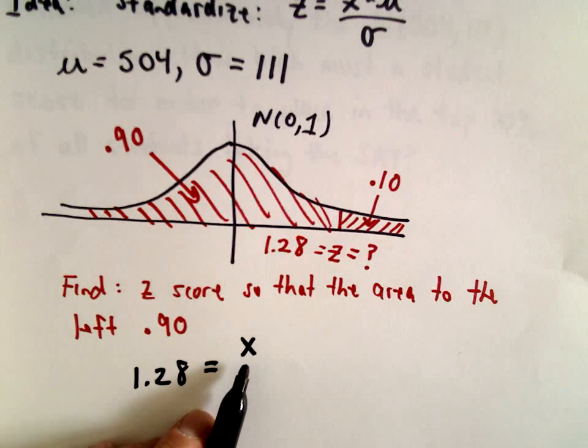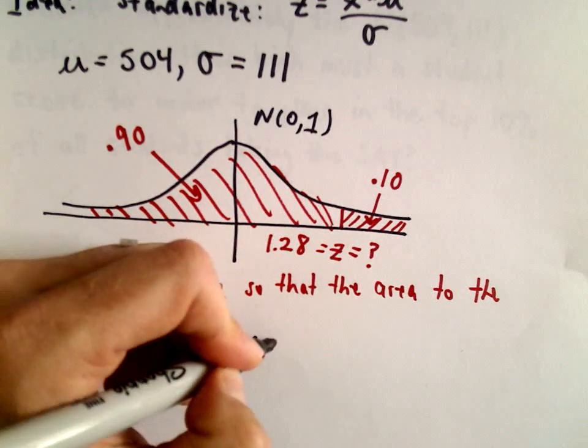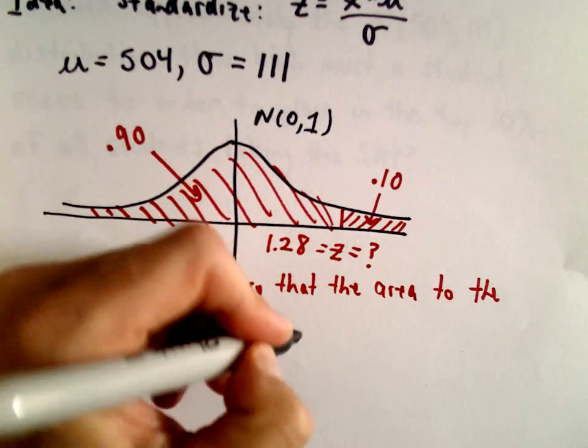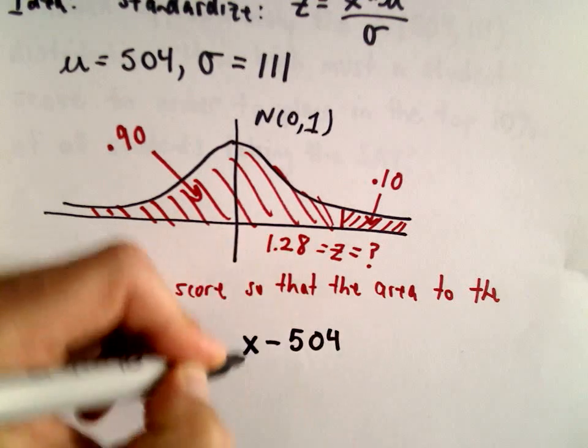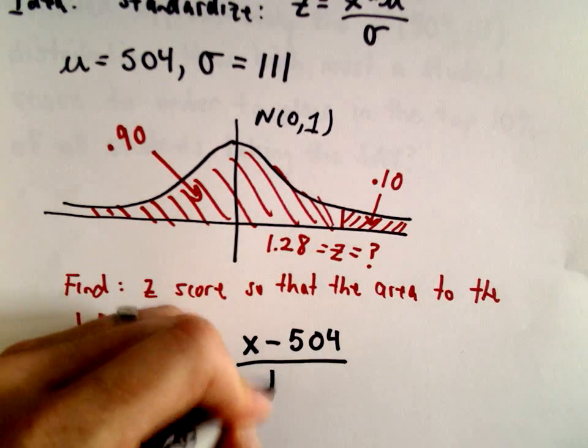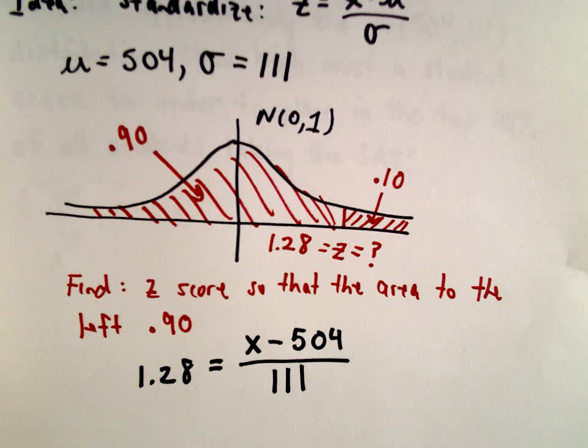x is going to be the score that you make on the test. That's what we want to figure out. So if I subtract the mean of 504 and divide by sigma, which is 111.